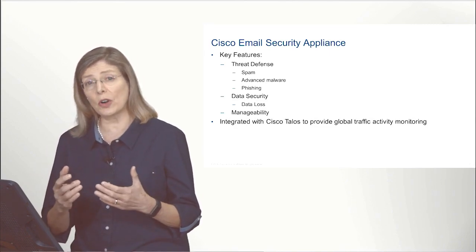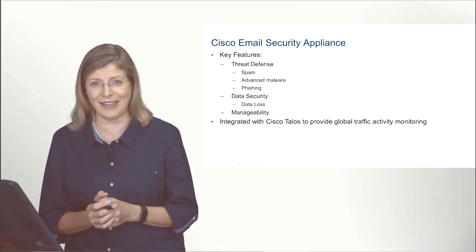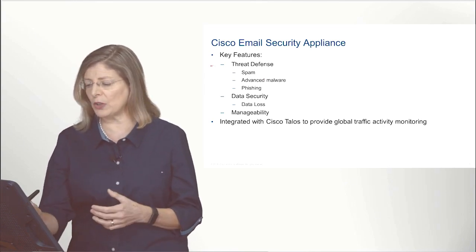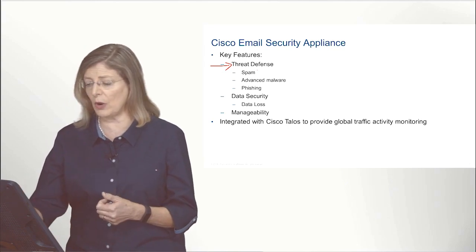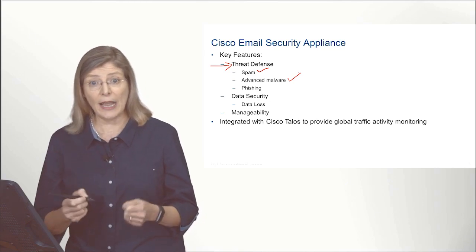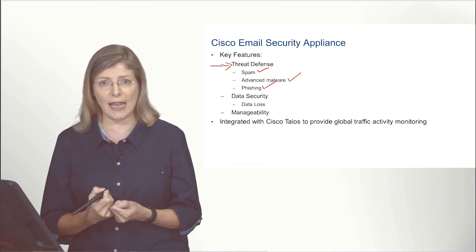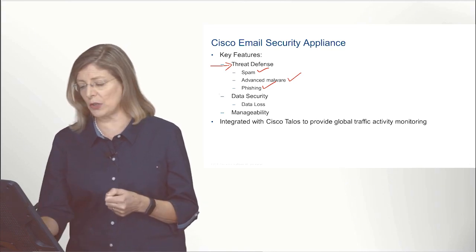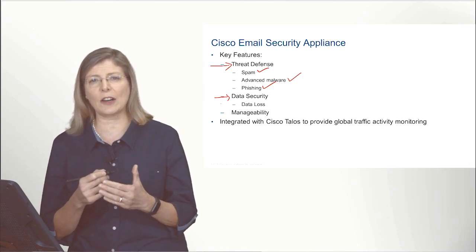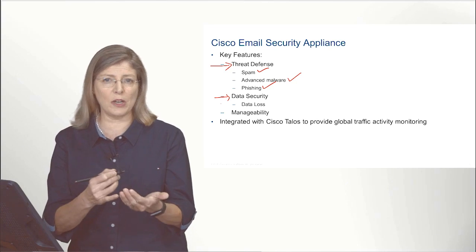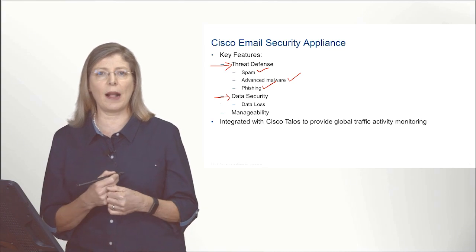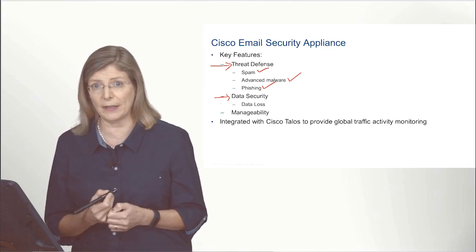To protect your email infrastructure and the security of your corporate network, you want to start using the Cisco Email Security Appliance. What the ESA will provide is what we call threat defense — it's going to protect you against spammers, against malware, and against phishing attacks. It also protects you for data security, which covers the loss of information — for example, someone sending an email, advertently or not, talking about a project your organization is working on.